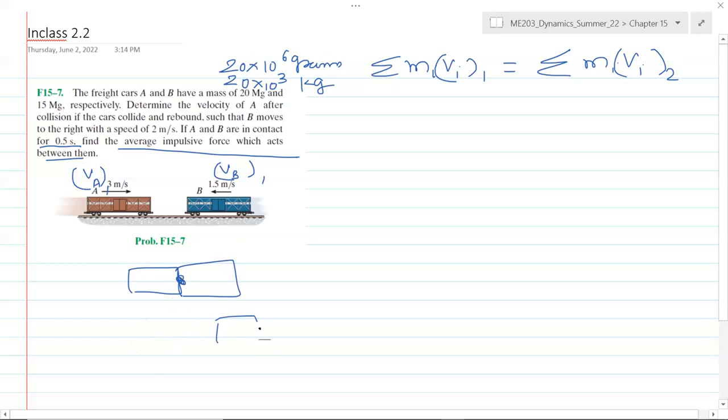After that impact, we know that B moves to the right with v_B2 as 2 meters per second. Now we need to calculate the velocity of car A, or speed of car A, after impact. This whole thing is before impact.